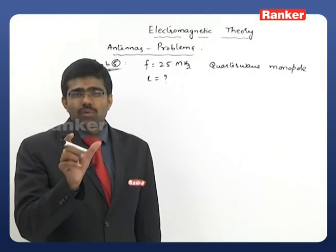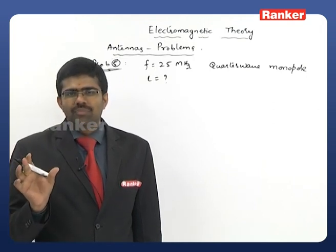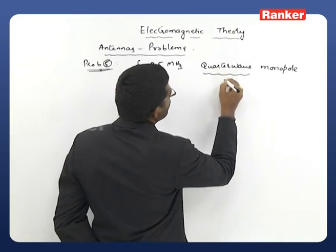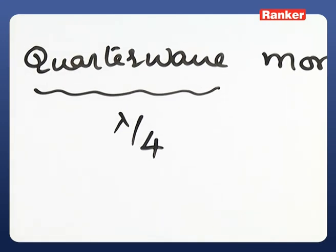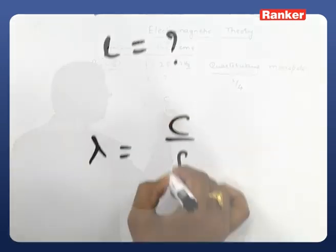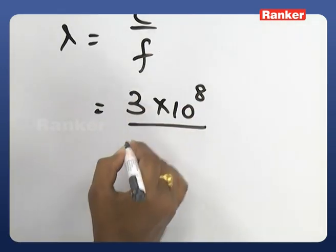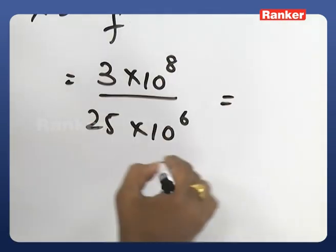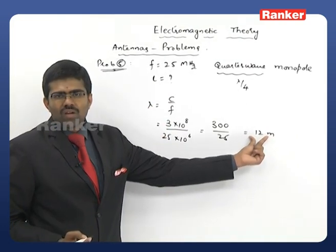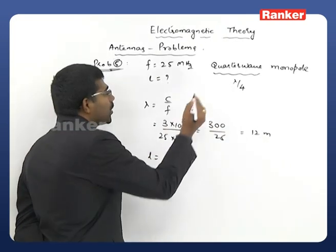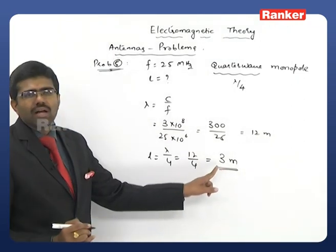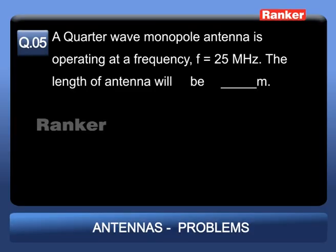λ = c/f = (3×10⁸)/(25×10⁶) = 300/25 = 12 m. The length of the antenna = λ/4 = 12/4 = 3 meters. So the length of the quarter-wave monopole antenna is 3 meters.